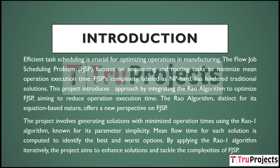Traditional solutions have been hampered by FJSP's NP-hard complexity. This project introduces a novel method by incorporating the RAW algorithm to optimize FJSP with the goal of reducing operation execution time. The RAW algorithm, with its equation-based character, provides a new perspective on FJSP. Solutions are generated with the RAW ONE technique, which is noted for its parameter simplicity.